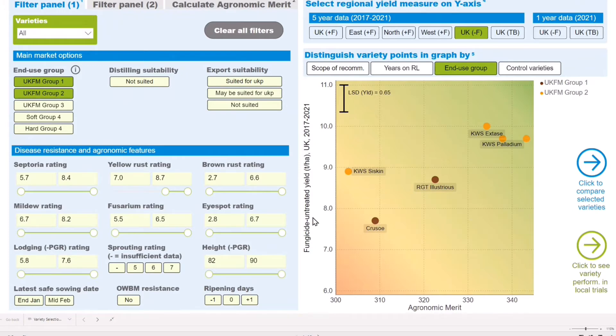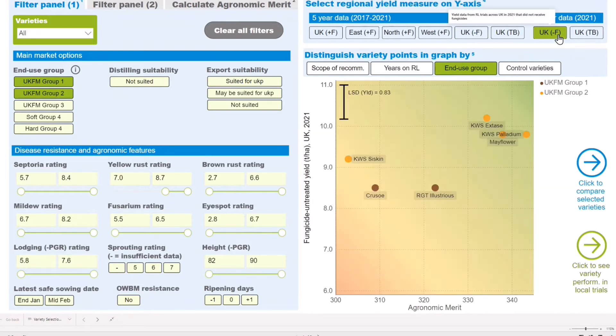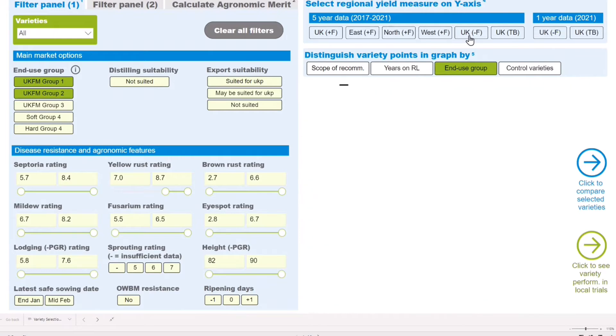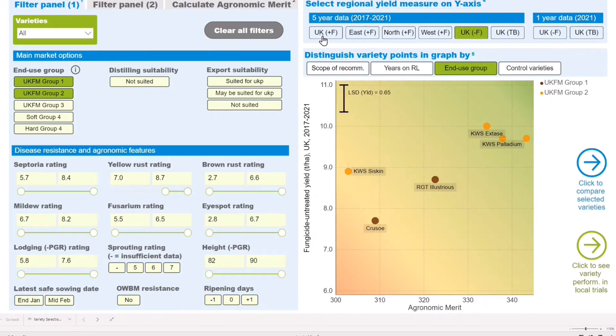The Y-axis of this chart lets you explore yield including the UK or regional performance of your selected varieties. For instance, you can look at the one-year or five-year yield data with and without fungicide inputs.